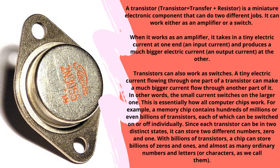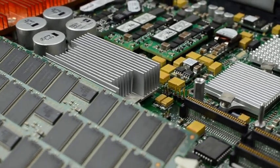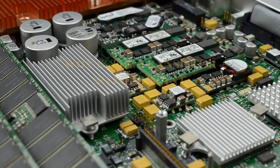Transistors can also work as switches. A tiny electric current flowing through one part of a transistor can make a much bigger current flow through another part of it. In other words, the small current switches on the larger one. This is essentially how all computer chips work. A memory chip contains hundreds of millions or even billions of transistors, each of which can be switched on or off individually. Since each transistor can be in two distinct states, it can store two different numbers: zero and one. With billions of transistors, a chip can store billions of zeros and ones, and almost as many ordinary numbers, letters, or characters.